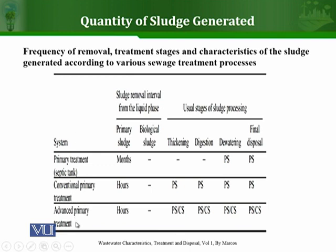The table covers conventional primary treatment and advanced primary treatment, showing how much time primary sludge is removed from the liquid phase and how much time biological sludge is removed. There is no significant production of biological sludge in these primary treatments. In the case of primary treatment, primary sludge is produced, then it is dewatered, and finally disposed of. Depending on the system utilized, the sludge will be removed after a given period of time and further treated to remove water.